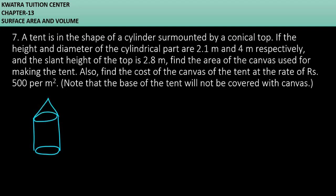So they said that height and diameter of the cylindrical part are 2.1 and 4 meter. So how much height is this cylinder? It is about 2.1 meter. And what is the diameter? Diameter is 4 meter here. So radius will be 2. Slant height of the top, that is 2.8. So this part is given to you 2.8 meter.